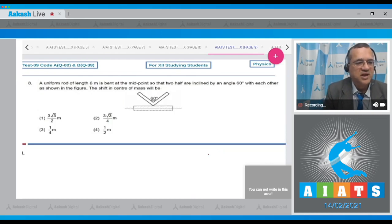Let us start question number 8. A uniform rod of length 6 meter is bent at the middle so that two halves are inclined by an angle of 60 degree with each other as shown in the figure. The shift of the center of mass will be, these are the four options. So it was straight, now look at from this point as this rod is bent.